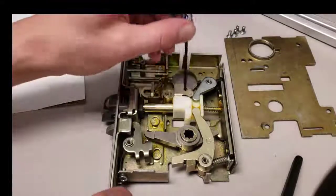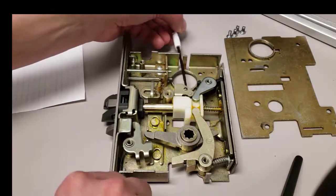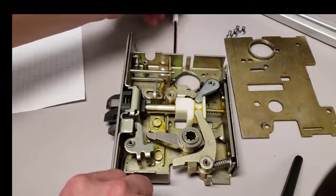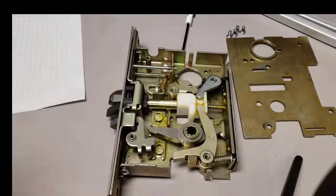Once the function screw is threaded down and is no longer in the hole, if this was my mortise cylinder cam it would then be able to rotate and hit the locking plate which controls whether or not your lever trim is locked or unlocked.